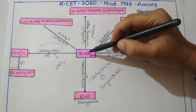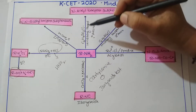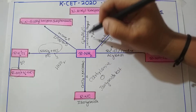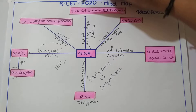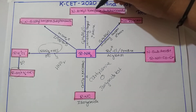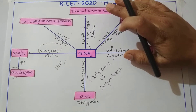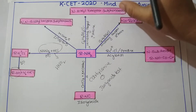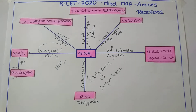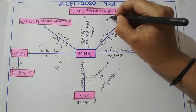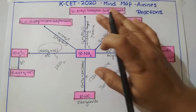When primary amine is treated with the Hinsberg reagent, it results in the formation of N-alkyl benzene sulfonamide. When this compound is then treated with alkali (sodium hydroxide), it is soluble. The compound formed is soluble in alkali, through which you can identify it as a primary amine.